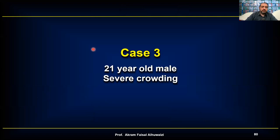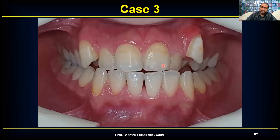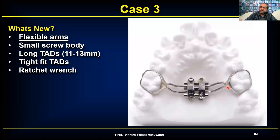Case three: a 21-year-old male with crowding. I decided to use the MSE — not a surgical case, but I wanted more skeletal than dental expansion. Opening the package, I examined my new 8 mm MSE. I noticed the arms are flexible, not rigid — a pleasant surprise. The body is very small, and it came with 11 or 13 mm screws, which are quite long for good bicortical purchase.